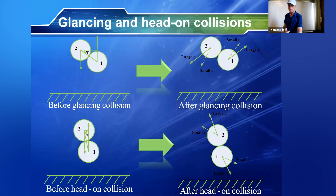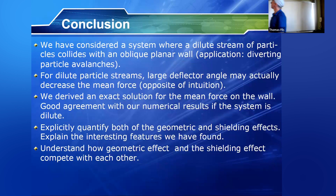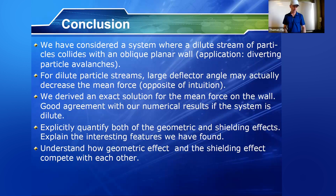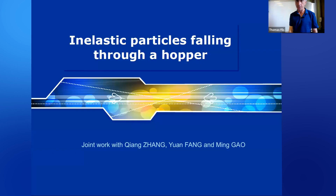So in summary for the first problem: we've taken a very simple system — particles colliding with an oblique wall — and shown surprising non-monotonic behavior. By developing this relatively simple theory, we've shown how geometric effects and shielding effects compete with each other, and under what circumstances they produce these unexpected behaviors in the force on the wall.